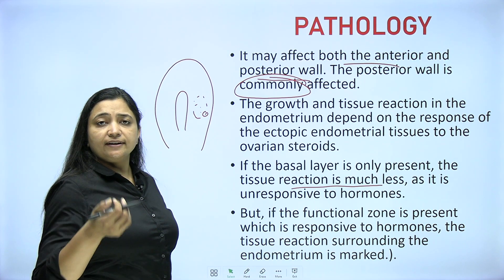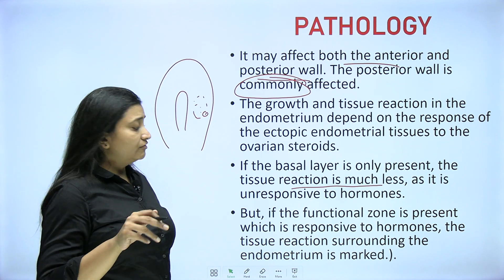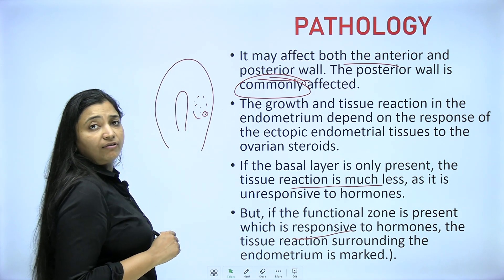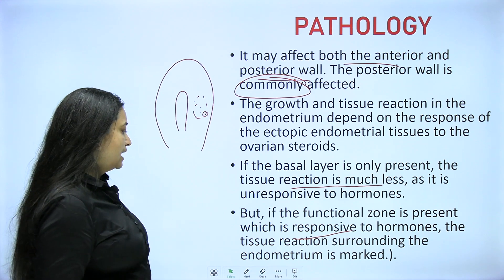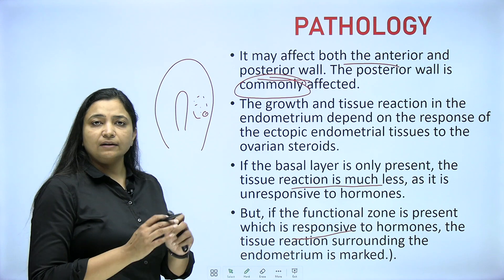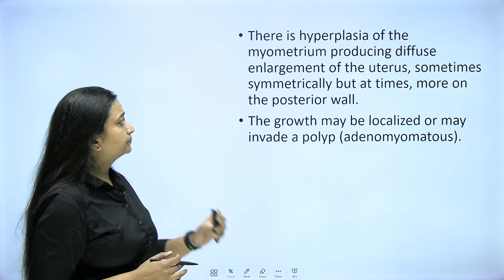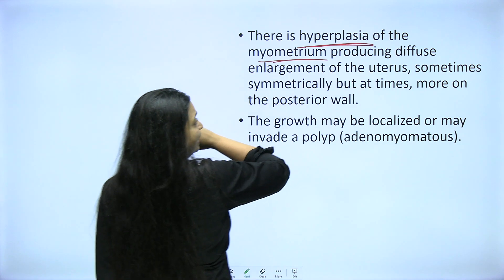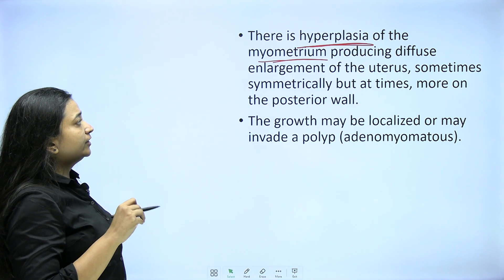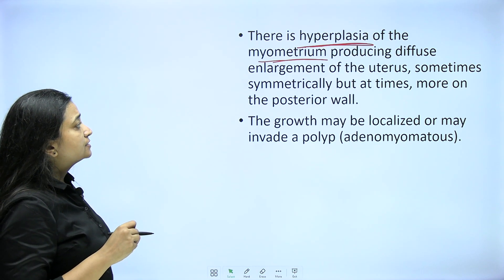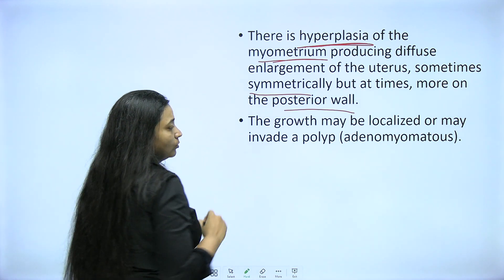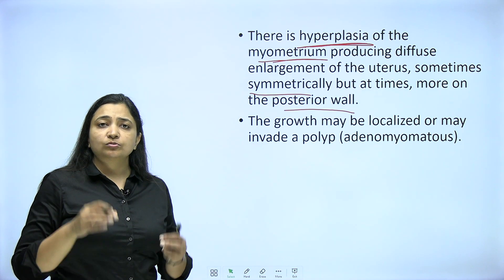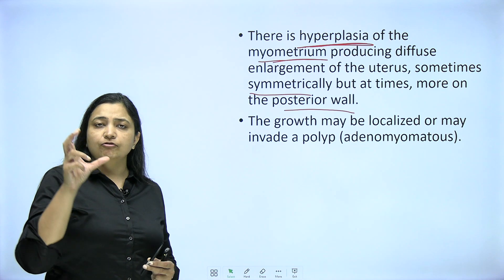It is all about the luck of the patient — if only the basal layer is embedded, it is okay. But if the functional layer is also embedded, which is highly responsive to hormones, then the tissue reaction is marked. It will bleed with every cycle, and the myometrium gets thicker and thicker. There is hyperplasia — increased cell volume as well as cell number of the myometrium — producing diffuse enlargement of the uterus, sometimes symmetrically but most often of the posterior wall. The myometrial cells increase in number as a reaction to the presence of blood inside the myometrium, and the wall becomes very thick.